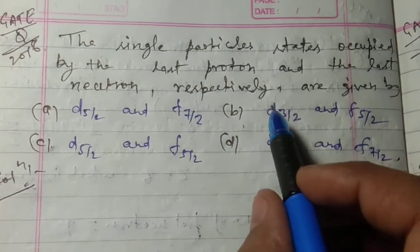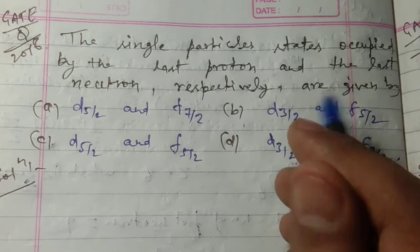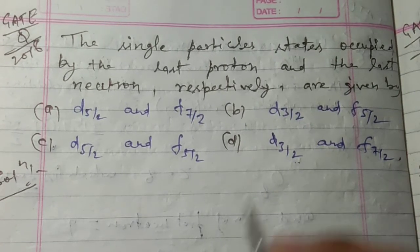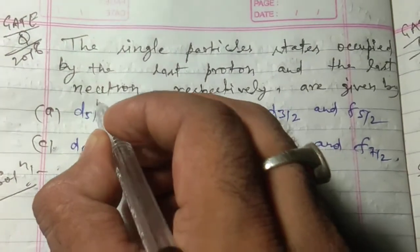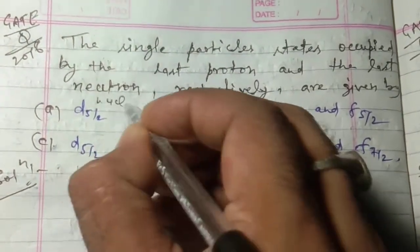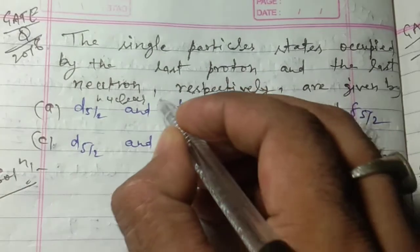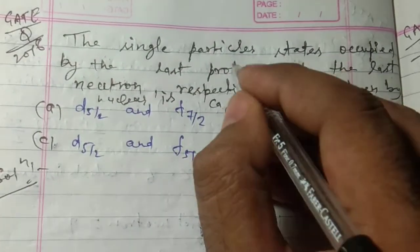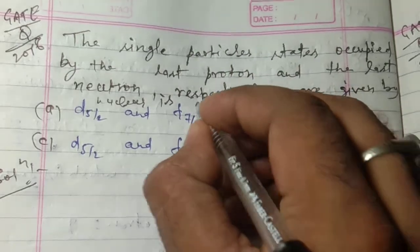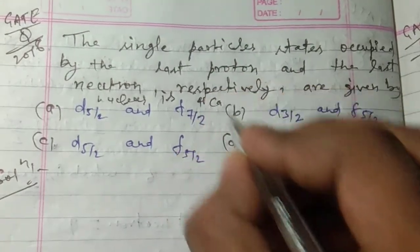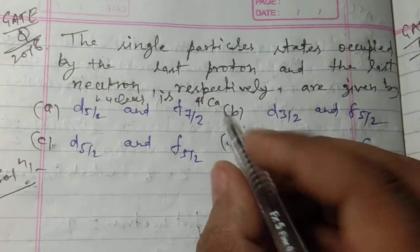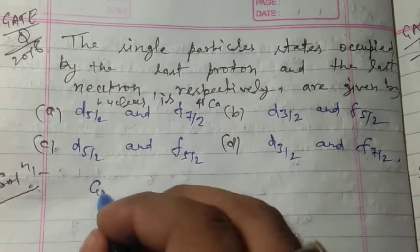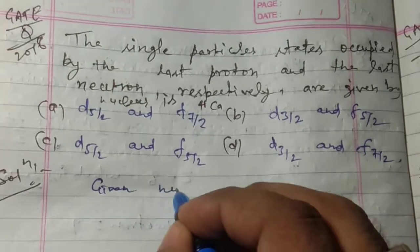So here, there's a mistake in the question. The given nucleus is calcium-41. We have to calculate for calcium. The given nucleus is calcium-41.